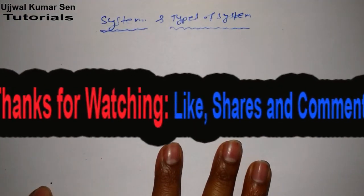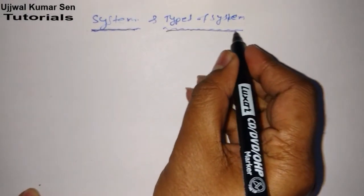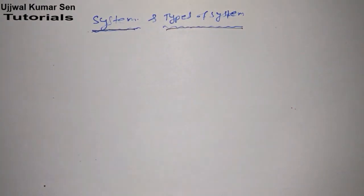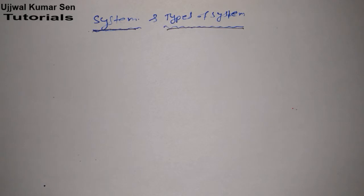This is Ujjal Kumar Sen, and in this video tutorial I'm going to share with you systems and types of system — what is a system, and the types of system. This tutorial will definitely help you get knowledge about this topic. We are studying thermodynamics, which is all about system and surrounding, and what separates them is known as boundary. Boundary, surrounding, and universe all depend on the concept of system.